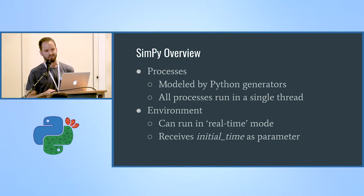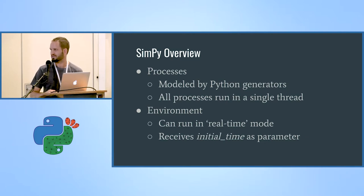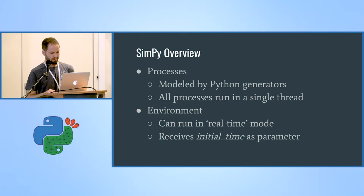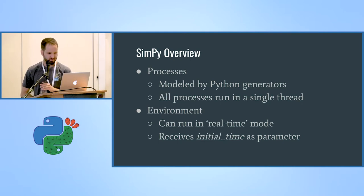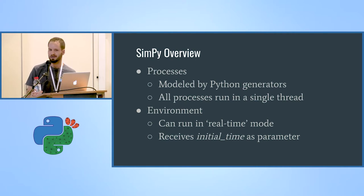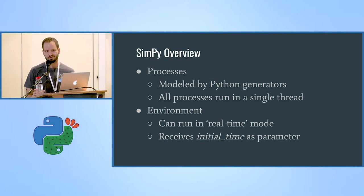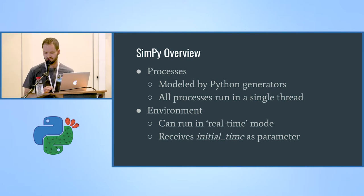The approach shown so far is called 'as fast as possible,' meaning the simulation tries to run as fast as it can. SimPy also allows running in a real-time mode which tries to follow real time — useful if you are doing manual testing or combining real hardware with simulated hardware. The environment also receives the initial time as a parameter, and that's how we set the simulation time we want to run.